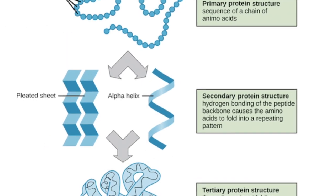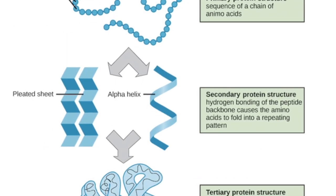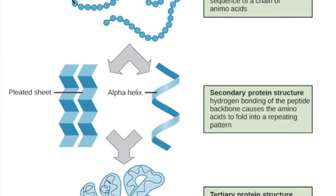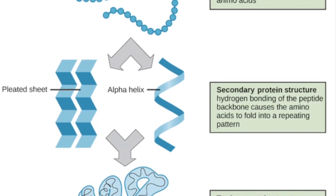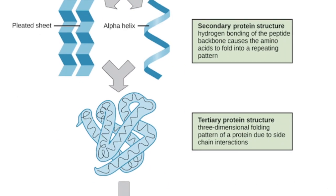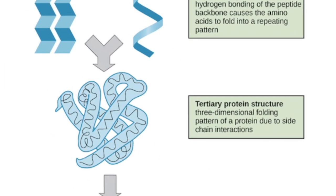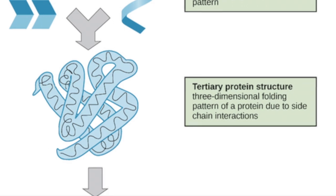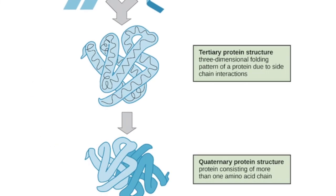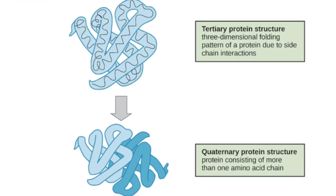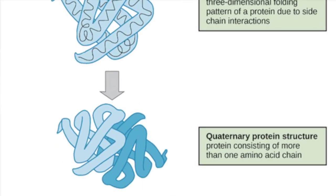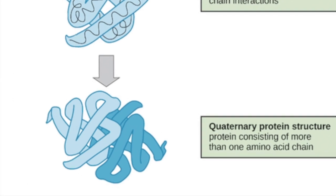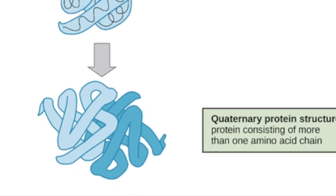Then you have your secondary, which is where you start getting folds. You have tertiary, which is a 3D shape, and quaternary, which is when you have more than one tertiary structure together.